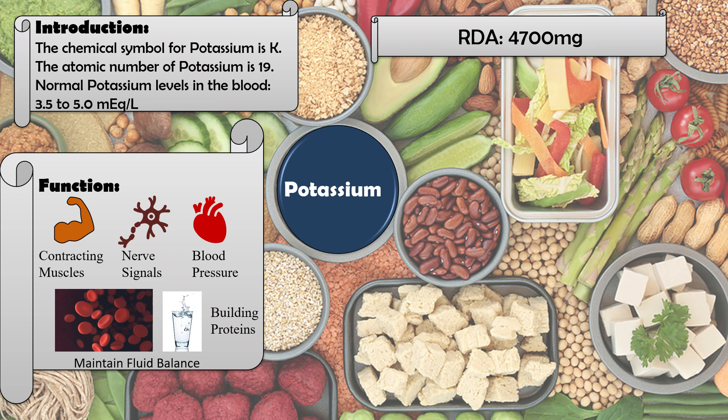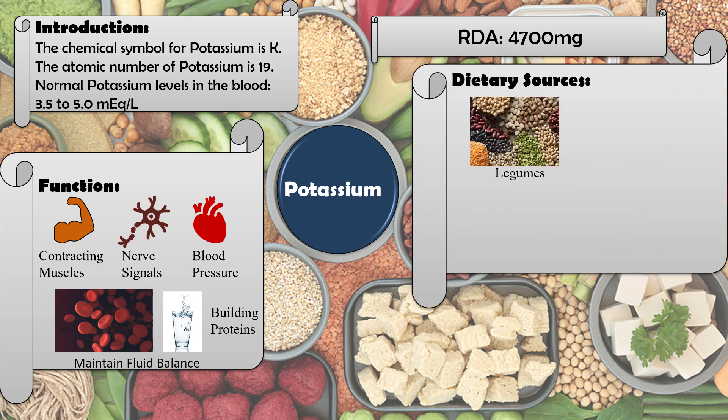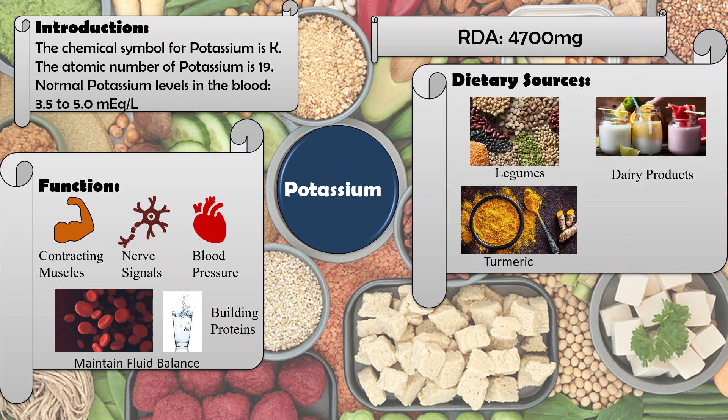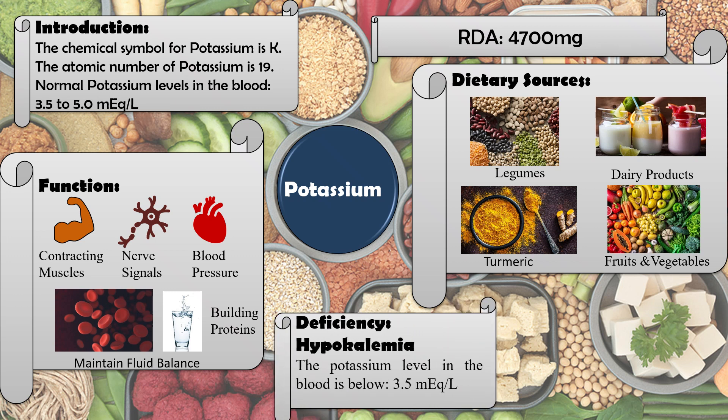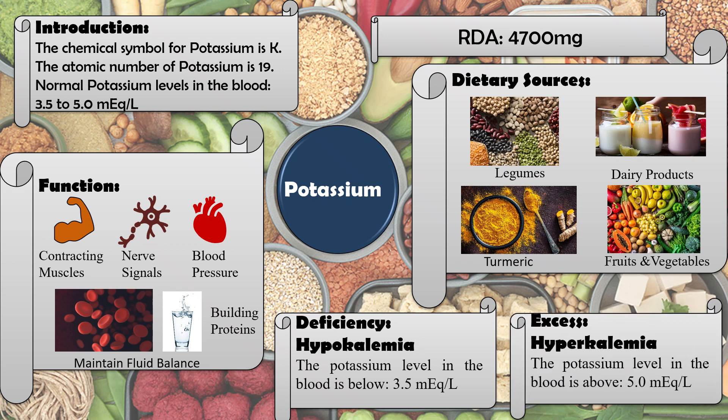Dietary sources of potassium include legumes, turmeric, fruits, and vegetables. If potassium levels decrease below the normal range, it is known as hypokalemia. If potassium exceeds the normal level in the blood, it is known as hyperkalemia.